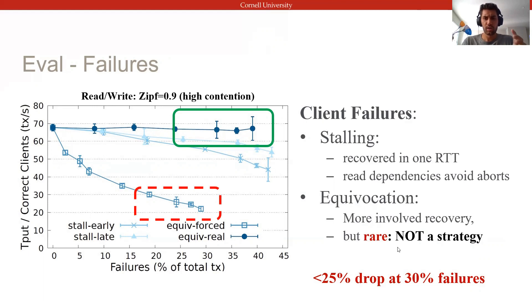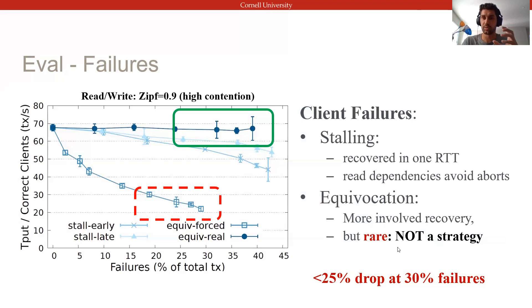Overall, we can show that despite more than 30% of total transactions being faulty, Basel remains not just live but has robust performance, since failures only affect conflicting transactions, and when they do, they can be recovered swiftly.